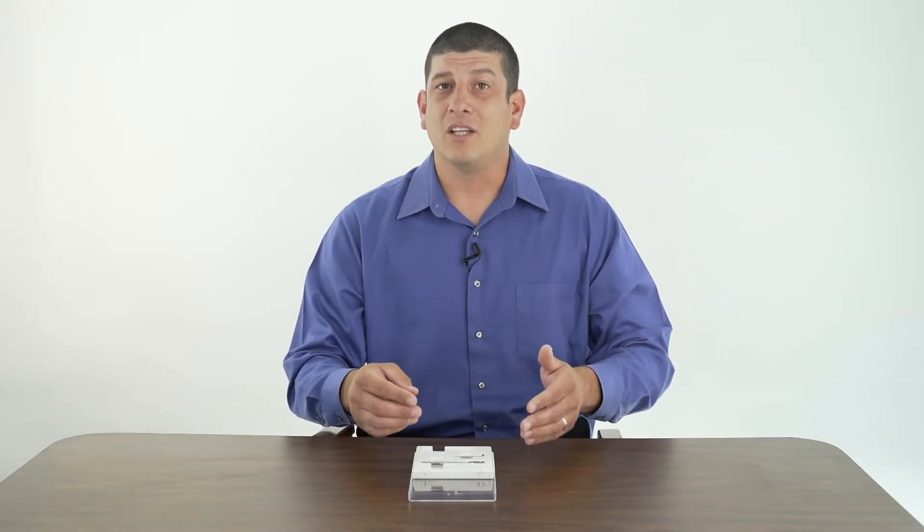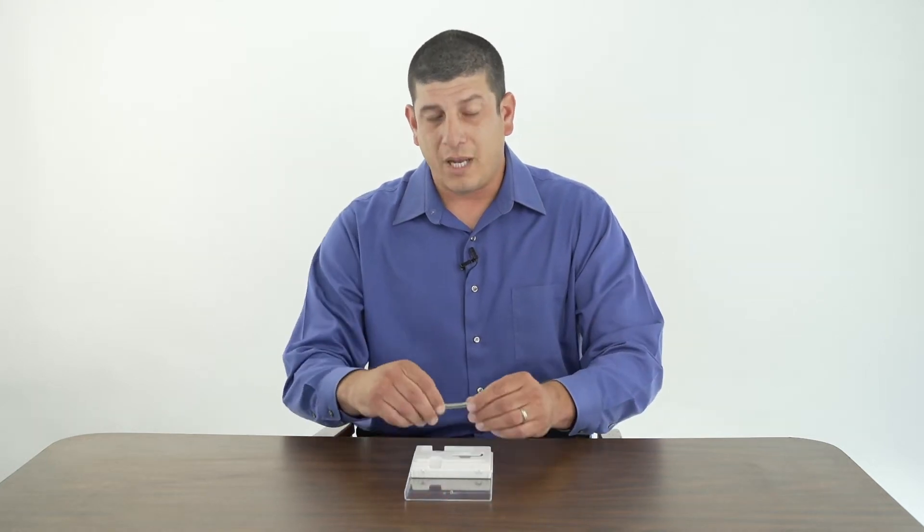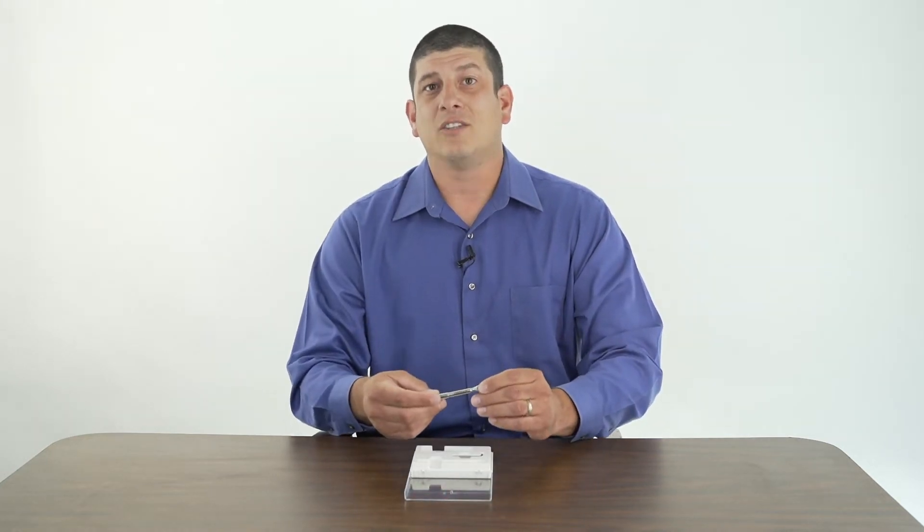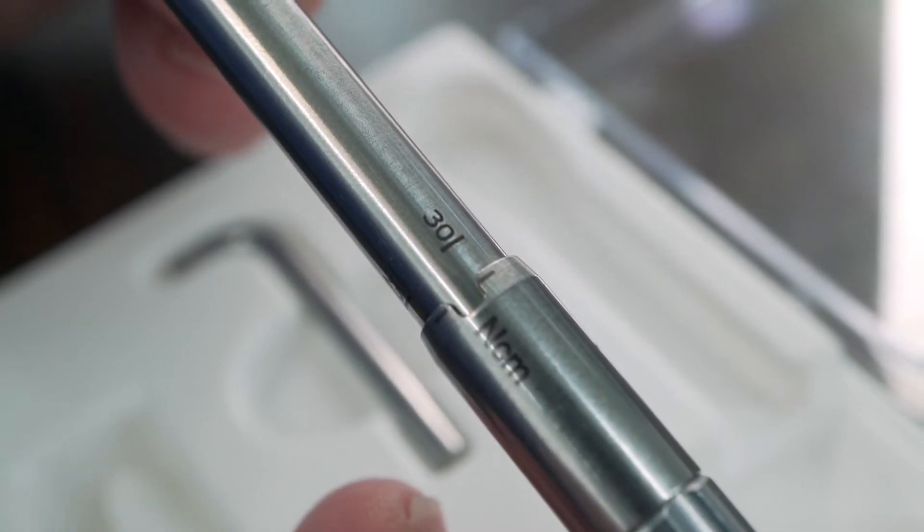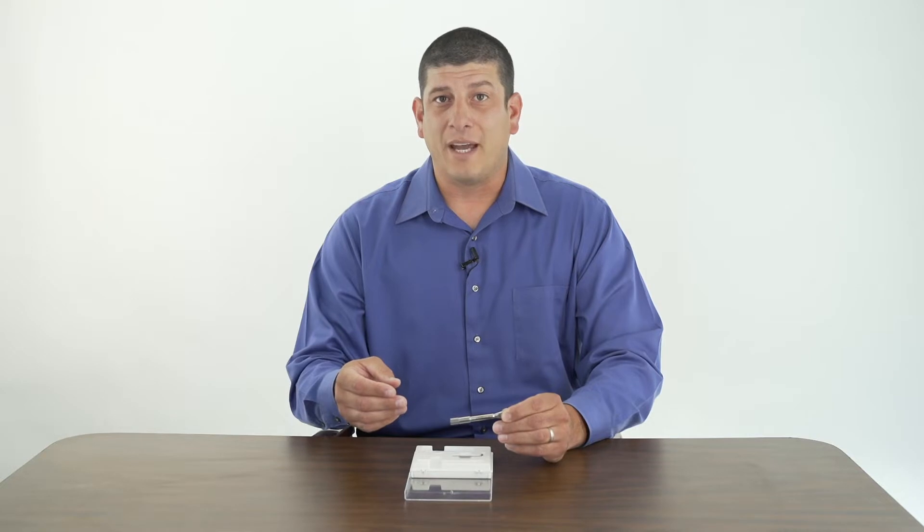So the first thing I'd like to show is how we can adjust the torque value on the Omega torque wrench. The Omega torque wrench is designed to be adjustable from 15 newton centimeters all the way to 35 newton centimeters, and there's a reason for that.